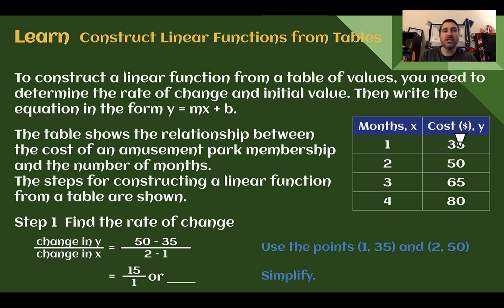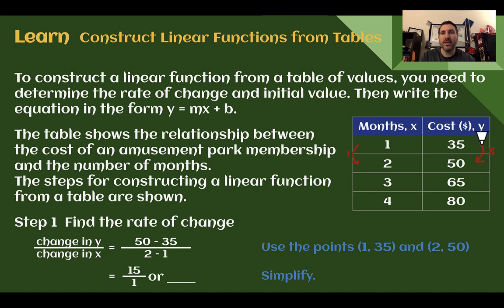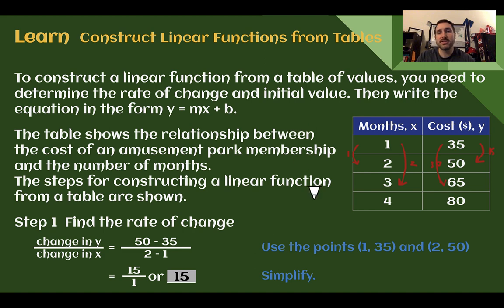Here we have a table showing the relationship between amusement park membership months and total cost. First, let's find the rate of change — we see how much the total cost changes for every month. It went up $15 for one more month. Even if we skipped farther down, the total went up 30 in two months: 30 divided by 2 is still $15 per month. For these linear functions, your rate of change should be constant no matter which rows in the table you choose.